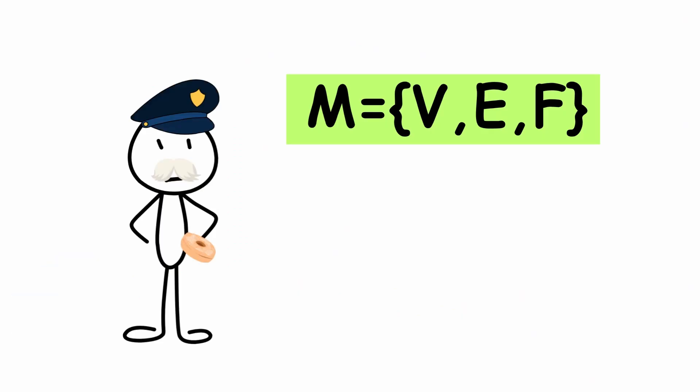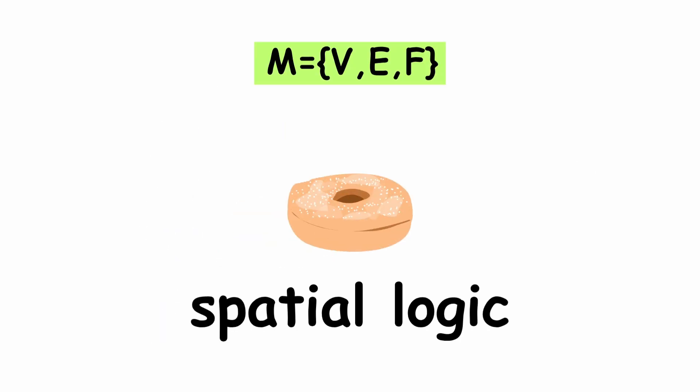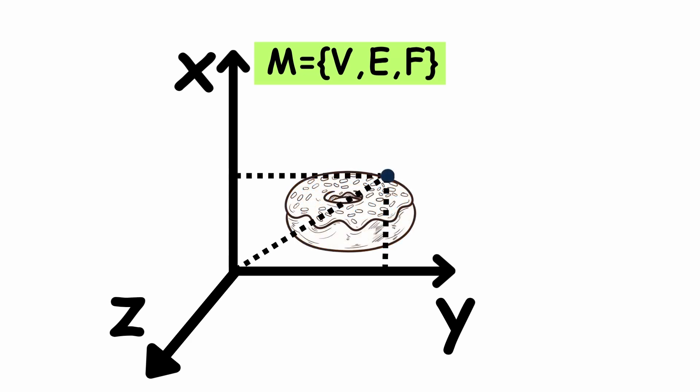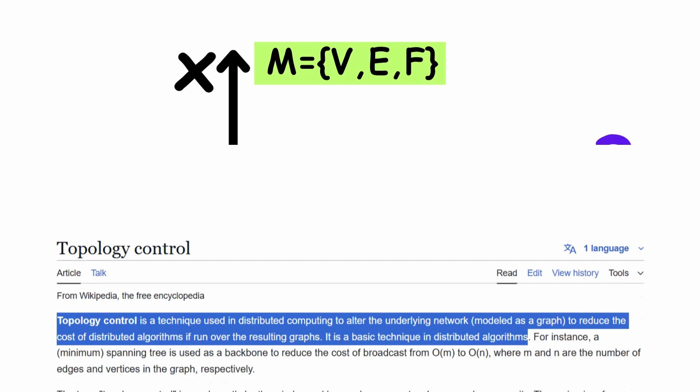But this definition goes beyond a simple enumeration of elements. It encompasses the spatial logic that allows an object to occupy a volume and exist within a Cartesian system. Each vertex is precisely positioned using coordinates in R cubed, and the connectivity between them gives rise to a controlled topology.